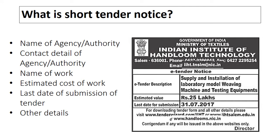A short tender notice is a tender notice published in the newspaper. In any newspaper you can see the tender notice. In a tender notice published in a newspaper, the name of the agency or authority is given, the contact details of the agency or authority are given, the name of work is also given, and the estimated cost of work is sometimes given. The last date of submission of the tender, either offline or online, is also given along with all other relevant details.